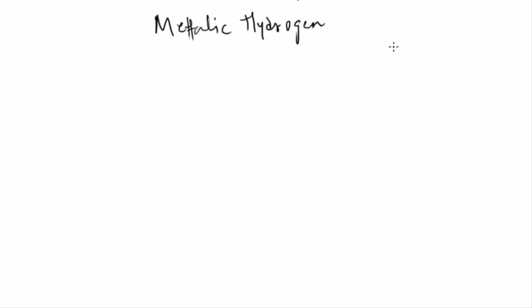A new material was discovered on 26 January 2017. It has never existed on Earth before. It is the first ever sample of metallic hydrogen on Earth.